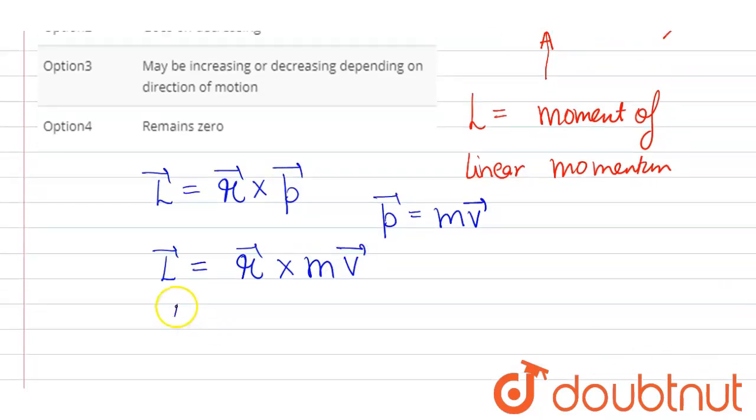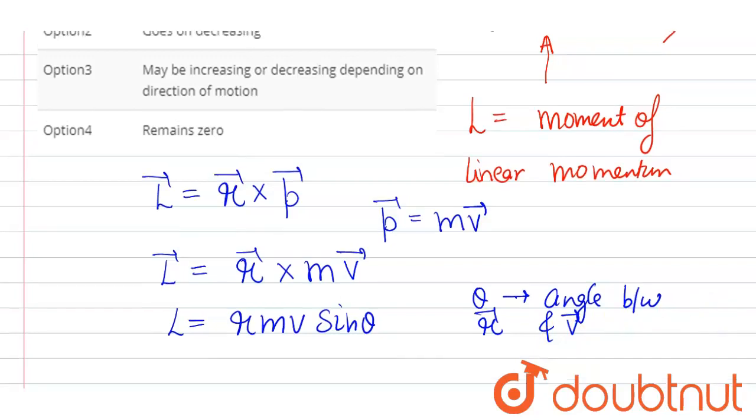Now further on expanding here we get, if we consider the magnitude, it will be r mv sin theta. Here theta is the angle between r vector and v vector. r vector is the position vector and v vector is the velocity vector.